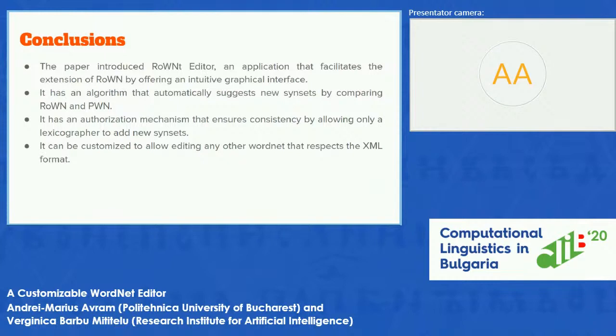In conclusion, the paper introduces the RoWordNet Editor, an application that facilitates the curation of WordNets by offering an intuitive graphical interface. It has an algorithm that automatically suggests new synsets by comparing the Romanian WordNet and the Princeton WordNet, and also an authorization mechanism that ensures consistency by allowing only an authorized person to modify the structure of the WordNet. The application can also be customized to allow editing any other WordNet, not only the Romanian WordNet, as long as it respects its format.